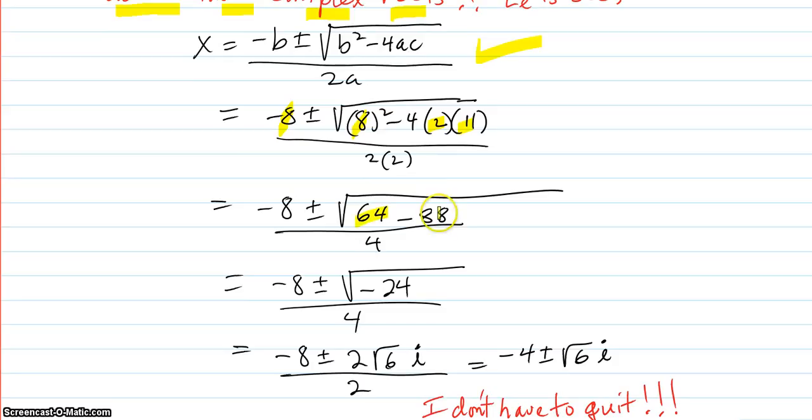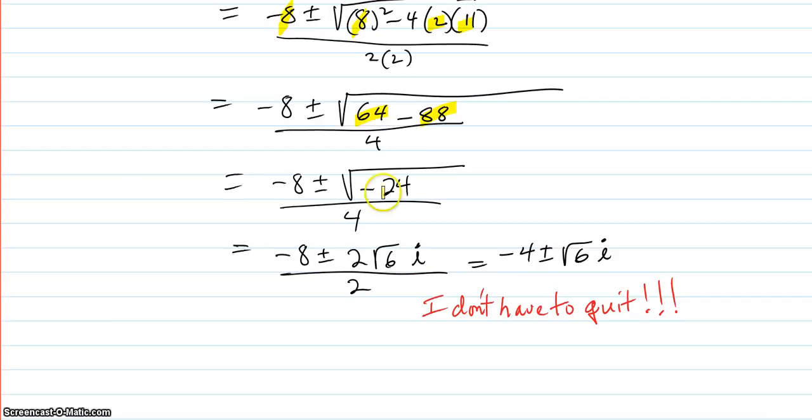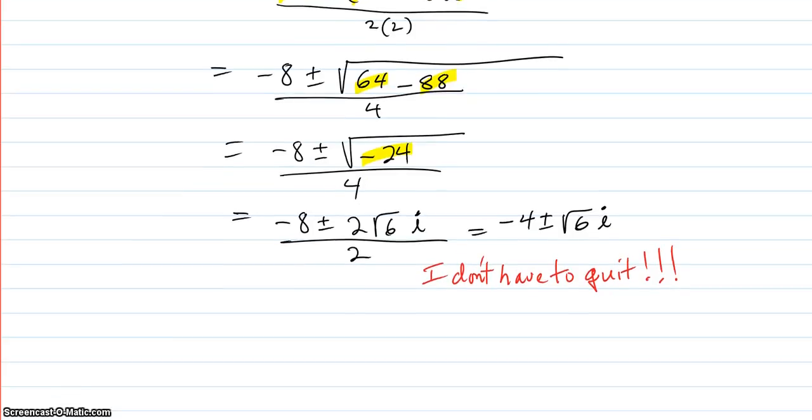You get in there, 64 minus 88. 2 times 4 is 8, times 11 is 88. And that's negative 24 right there.